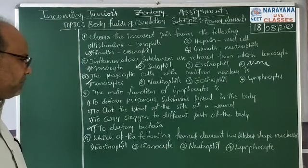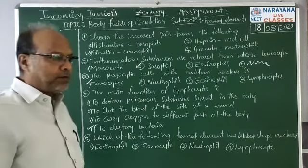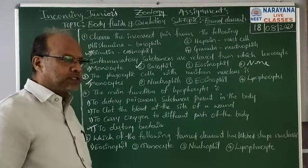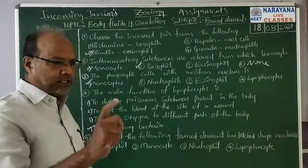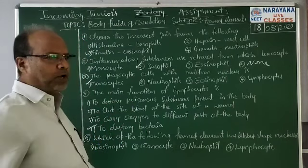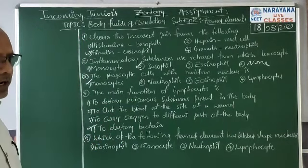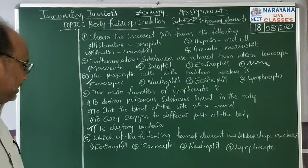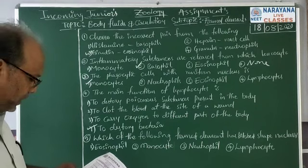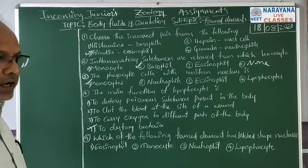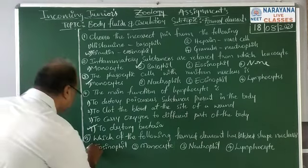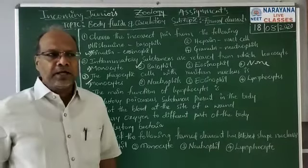Question number five: which of the following formed elements has a bilobed-shaped nucleus? Among basophils, eosinophils, and neutrophils, the nucleus is somewhat distinct. The choices are: number one, eosinophils; number two, monocytes; number three, neutrophils; number four, lipocytes. A distinct bilobed nucleus is present in eosinophils, so the correct answer is eosinophils.